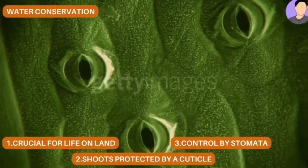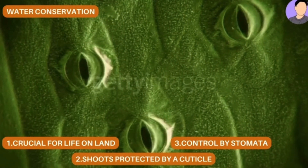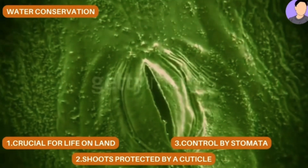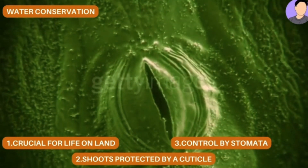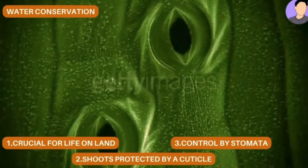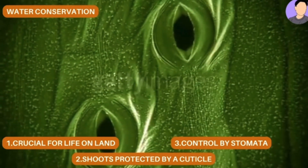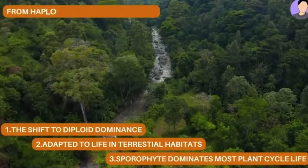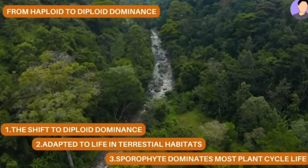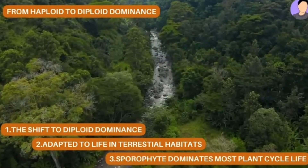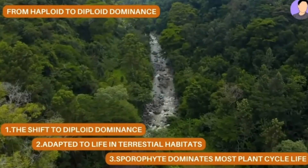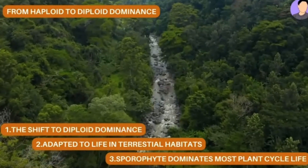Water conservation is crucial for life on land. Shoots become protected by a cuticle — a waxy coat that helps conserve water in cold and dry conditions. Stomata, which are tiny openings across the surface of leaves and some stems, evolved to control carbon dioxide absorption and restrict evaporative water loss. The shift to diploid-dominant life cycles was an adaptation to land colonization, as diploid sporophytes are fully adapted to terrestrial habitats and the diploid sporophyte dominates most plant life cycles.